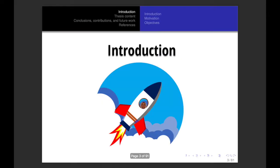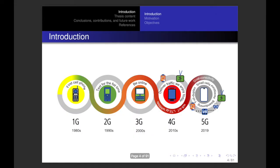When I started my research, the main concern at the beginning was to create pragmatic research. So I decided to study the optimization of cloud radio access networks to reduce the power consumption and the intercell interference. Before going directly to the thesis content, I need to introduce how cellular networks have evolved through generations.